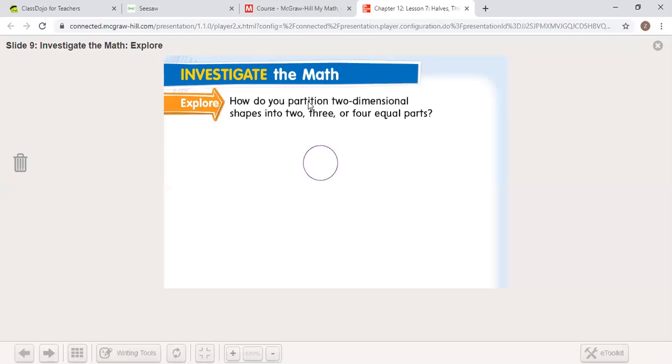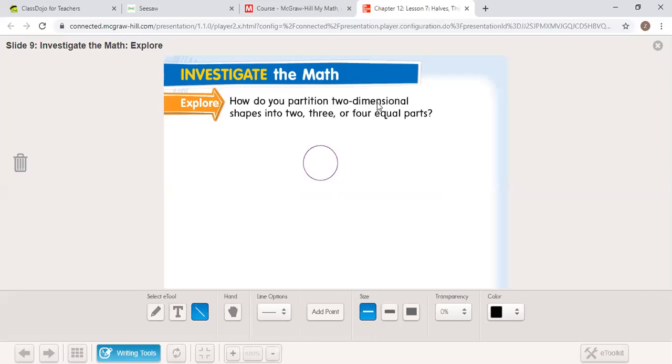How can I partition two-dimensional shapes into two, three, or four equal parts? So I want to make them equal parts. Let's start with two. To split this circle into two equal parts, I could draw a line down the middle. Now, I could also draw a line in any direction I needed to. But that was just one line to partition or split this into two equal parts.